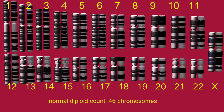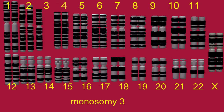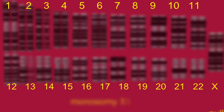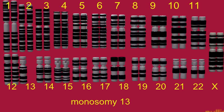One or more of these chromosomes may be missing in a condition known as monosomy. Monosomy 3 would represent a cell which has 45 chromosomes because there is only one copy of chromosome 3. Monosomy 13 depicts a condition in which there is only one copy of chromosome 13.